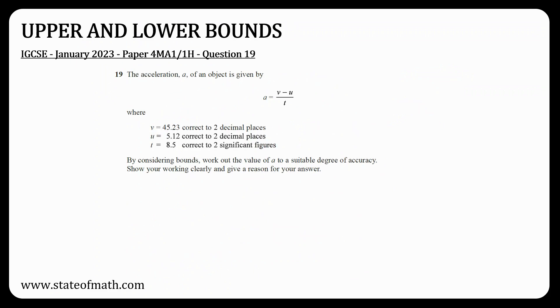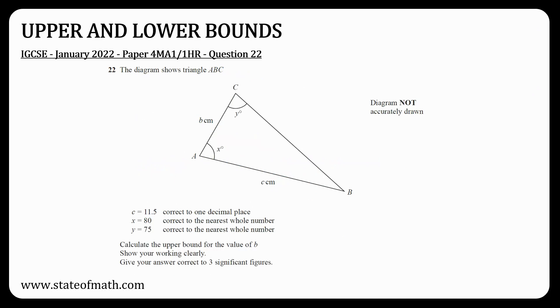Another topic that was missing from paper 1H was upper and lower bounds. In their simplest form these involve a simple calculation like this, but there was a couple of papers where Edexcel decided to merge these with trigonometry, like they did in January 2022.